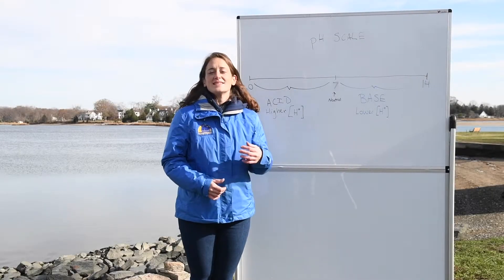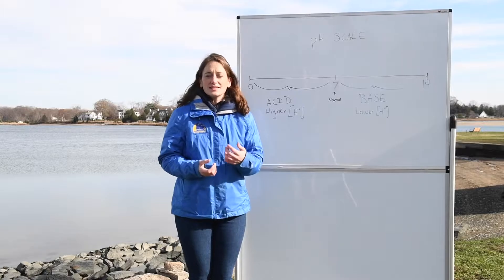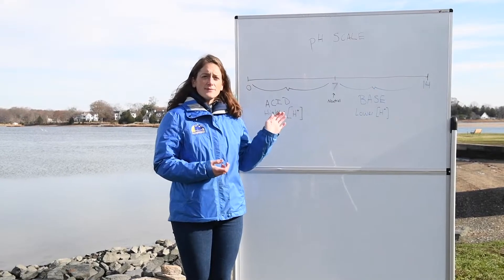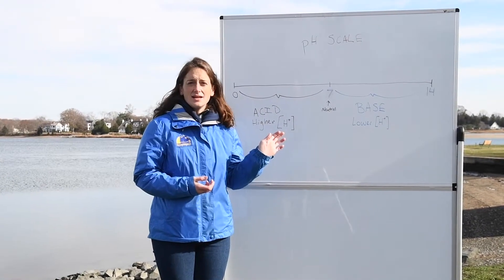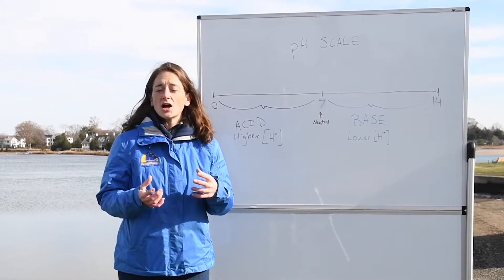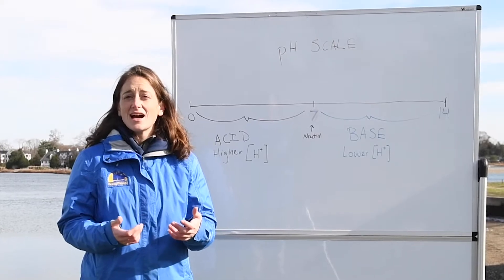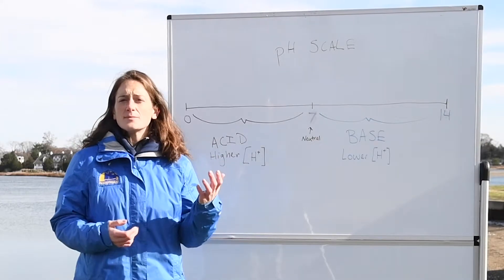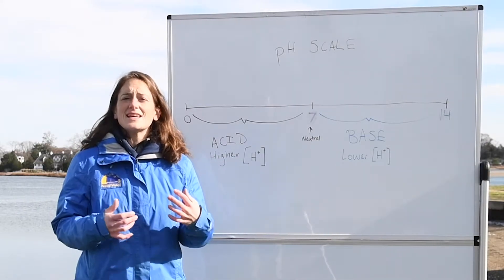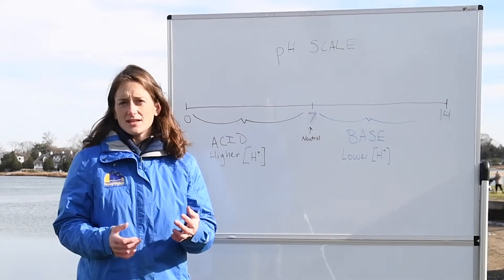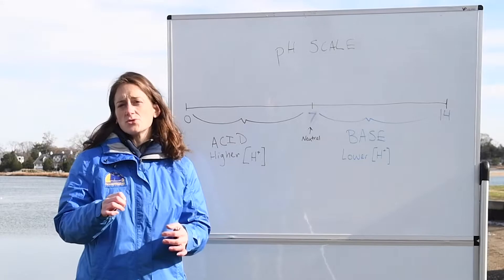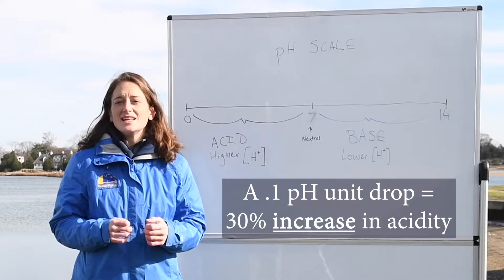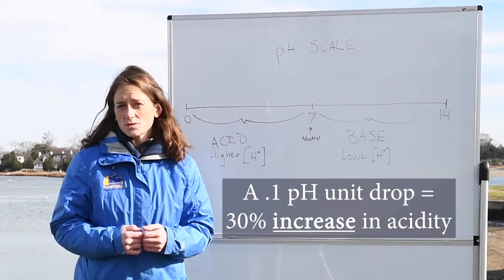The pH scale ranks the acidity or basicity of a substance. Sometimes basic substances are also referred to as an alkaline substance. Every move we make on our pH scale increases or decreases the concentration of hydrogen ions by 10 times. Each step we take closer to zero means there's 10 times more hydrogen ions, making it 10 times more acidic. Now, thinking back to that 0.1 pH drop we have seen in surface ocean waters — that 0.1 drop in the last 200 years is an increase of 30% in the acidity of ocean waters.